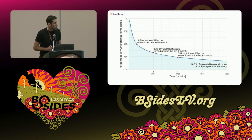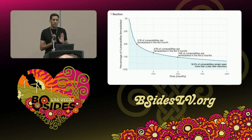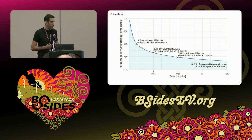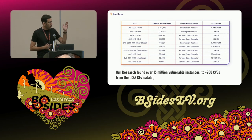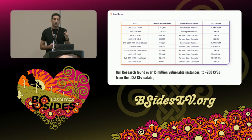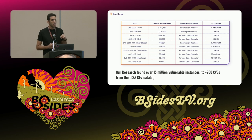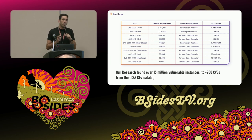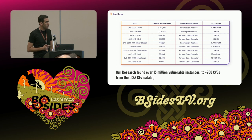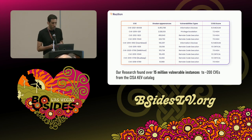Yet that is the current status quo, and clearly it isn't working. About 16% of vulnerabilities, according to research from the Cyentia Institute, are left unattended for over a year after initial publication. We have huge vulnerability backlogs, and attackers are exploiting them. Research analyzing the public attack surface for the CISA KEV catalog shows millions of publicly-facing instances vulnerable to actively-exploited vulnerabilities with known patches — and many of these are not new vulnerabilities.